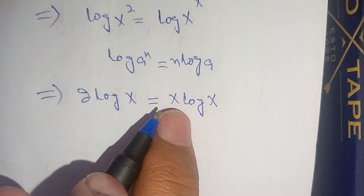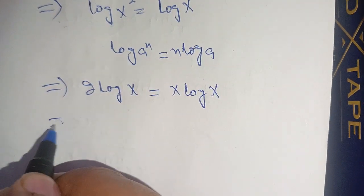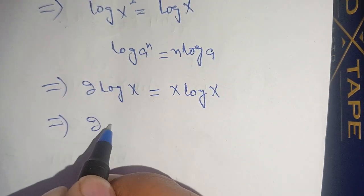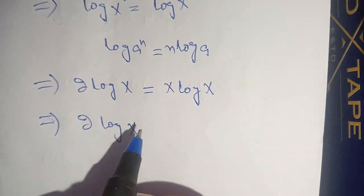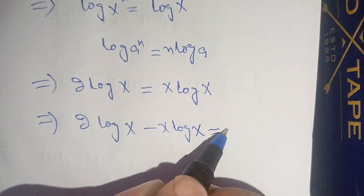When we shift our right hand side to the left hand side, we have 2 log(x) - x log(x) = 0.